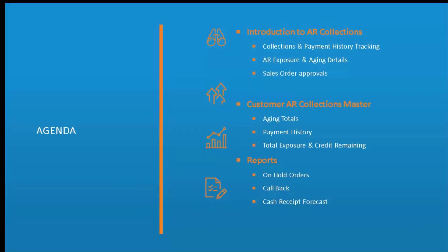Today we will be reviewing an introduction to our AR collections, including your AR collections and payment history, your AR exposure and aging details, as well as working with sales order approvals right from your AR collection screen. We will also review how our BP master data record can now contain all of your AR collections master information including aging totals, payment history, and total exposure and credit remaining. Last but not least, we will go over all of our AR collections and credit reports.